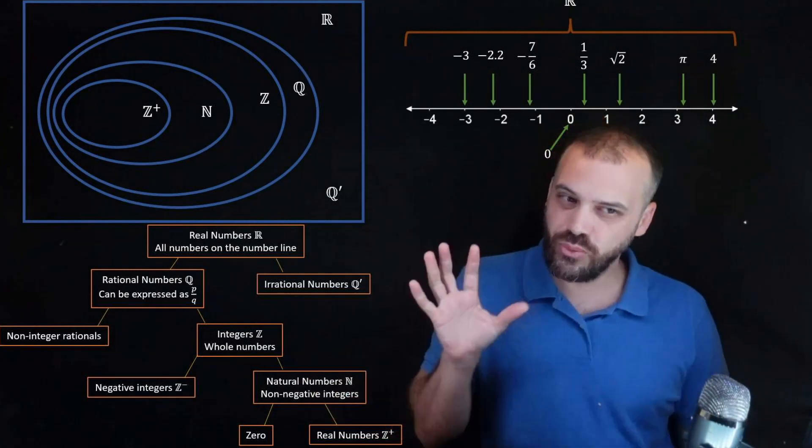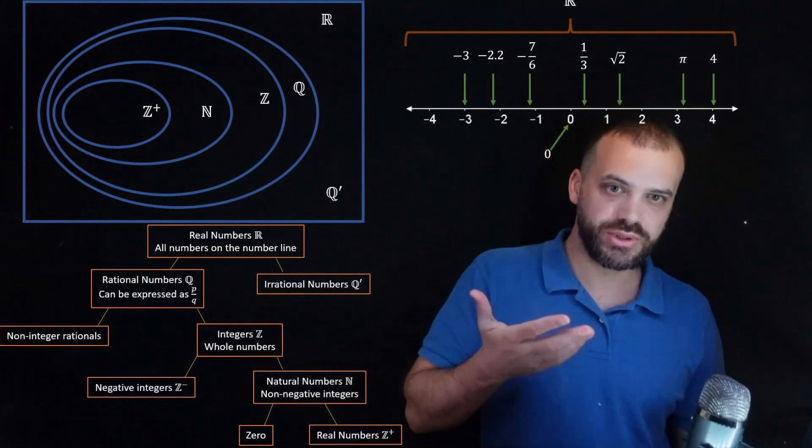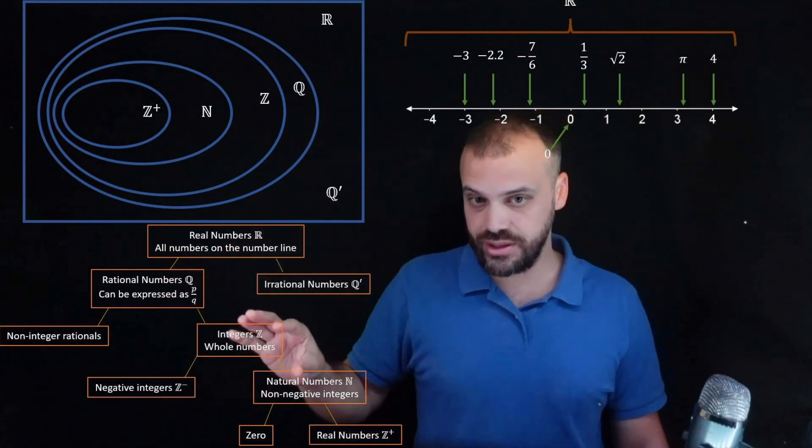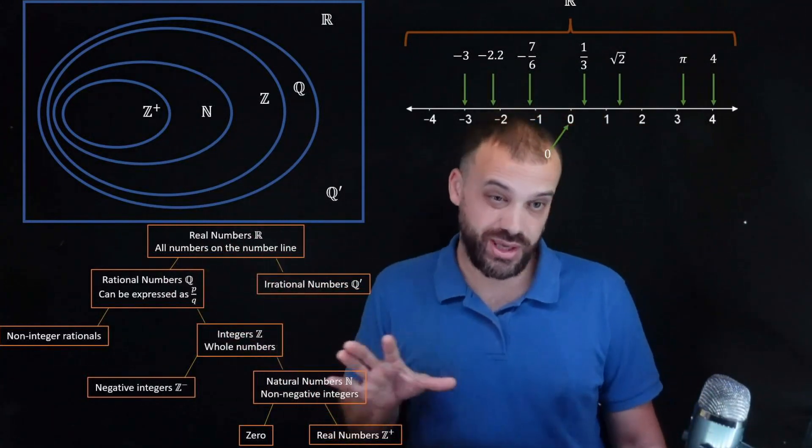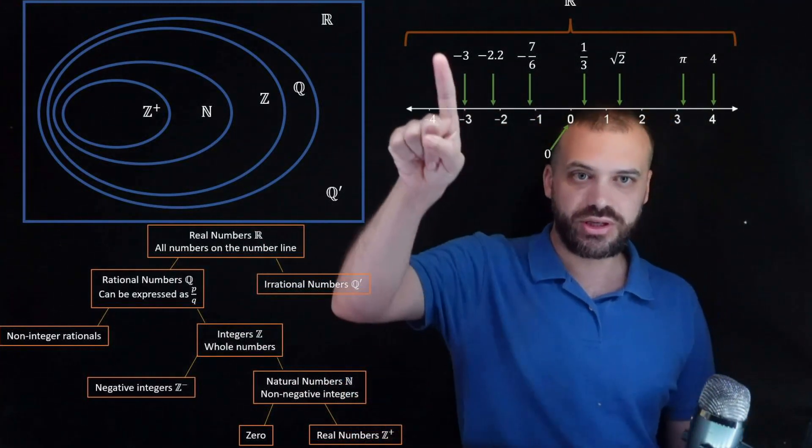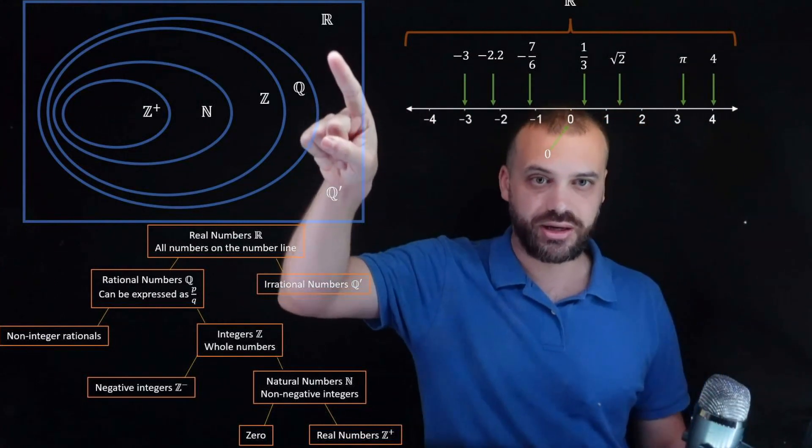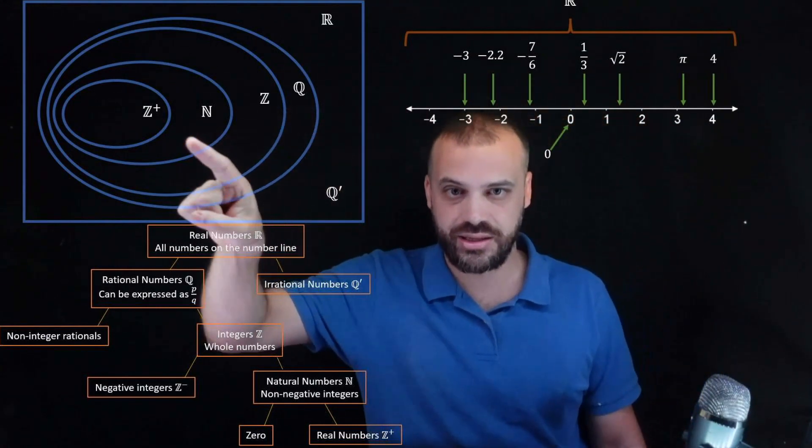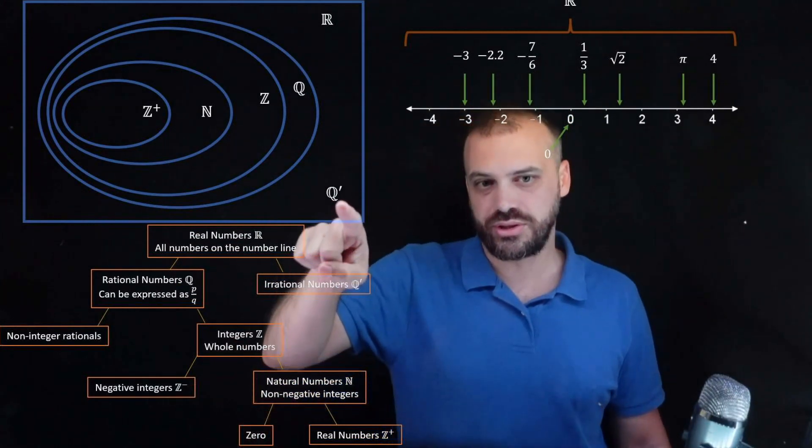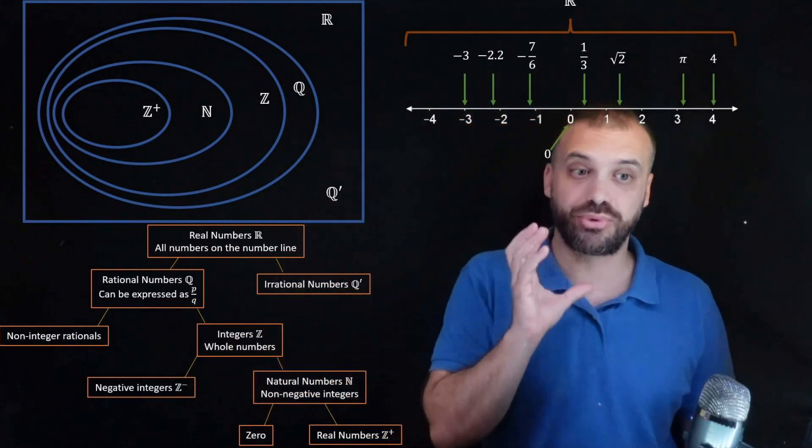So what do you need to take away from this? Well first of all you need to understand what is happening here, what types of numbers we have, but then you also need to memorize a few of these little things. You need to know what a double-struck R, Q, Z, N, Z plus, Z negative, or Q dash represent, right?